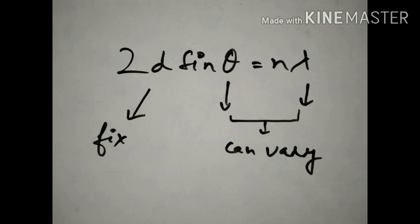In Bragg's equation, d is fixed (it's the crystal spacing), but theta and lambda can vary. The three methods of X-ray diffraction are based on this: in one method we fix theta and vary lambda; in another, we fix lambda and vary theta. Every time, the goal is to satisfy Bragg's equation. With this base set, let's move to the methods.